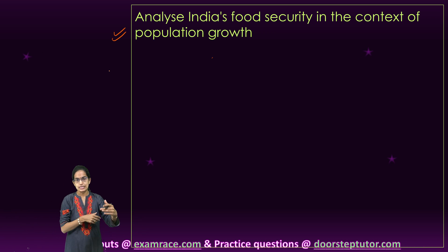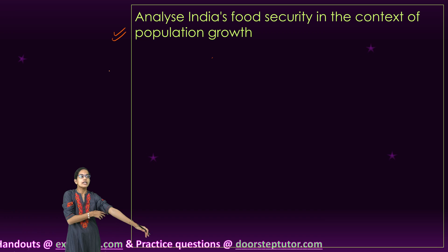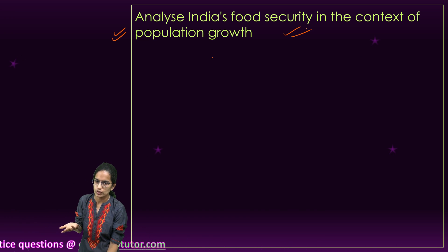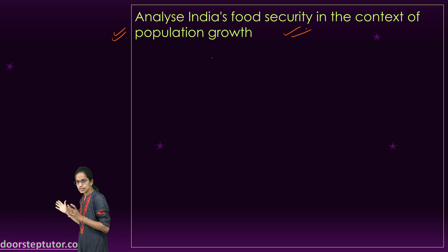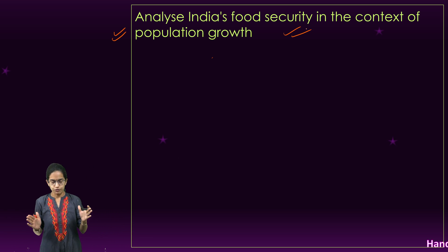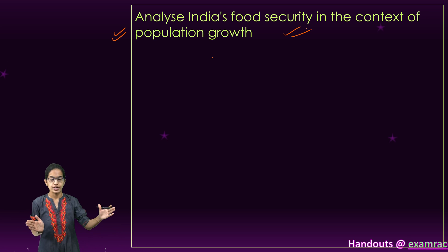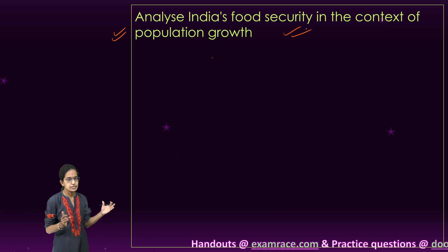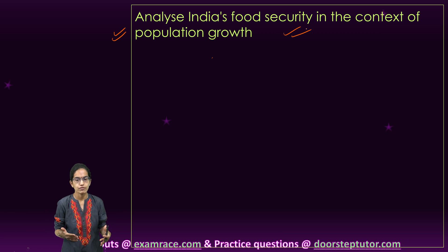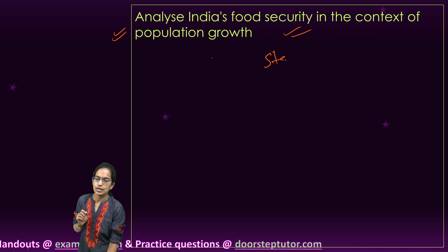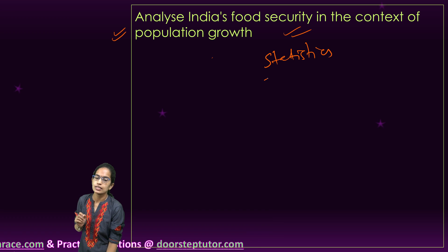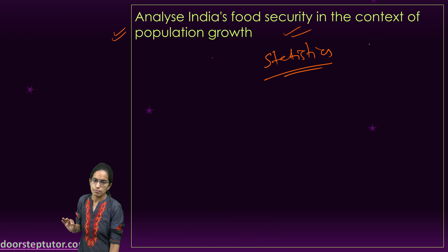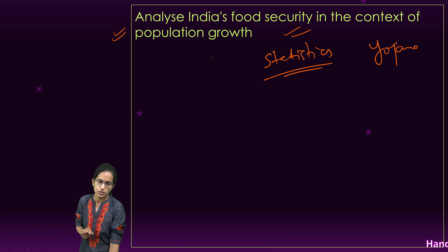For this paper specifically, the second section we have covered, it is good if you have good statistics. For example, the first question itself — if you have India's statistics on food grain security reserves and population growth, you can explain it very well with data. Statistics is something we focus on. Where do we get these statistics? The answer is simple: be a regular reader of Yojana and Kurukshetra. These magazines have most of the contemporary content.